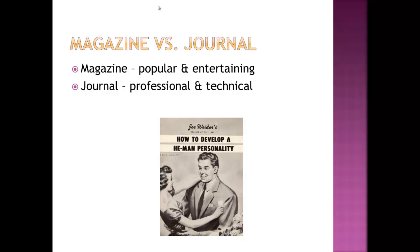What is the difference between a magazine versus a scholarly or research journal? A magazine's purpose is to be popular and entertaining. A research journal's purpose is to be professional and technical.